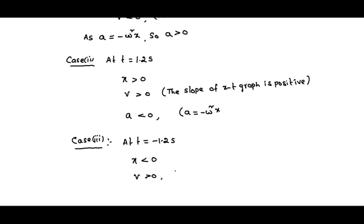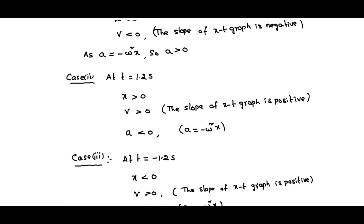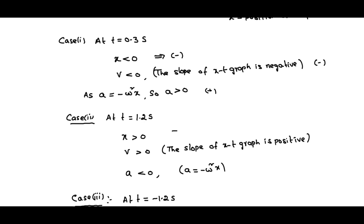And v will be more than 0, because the slope of the x-t graph is positive. And acceleration will also be more than 0, because a equals minus omega squared x, and x is negative here — negative of negative becomes positive. So these are the position, velocity and acceleration values at different times. For t equal to 0.3s: x negative, v negative, a positive. For t equal to 1.2s: x positive, v positive, a negative. For t equal to minus 1.2s: x negative, v positive, a positive.